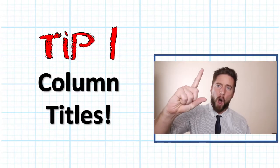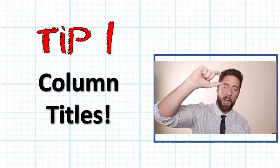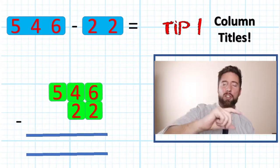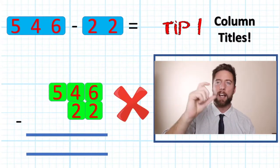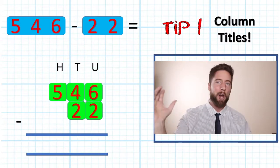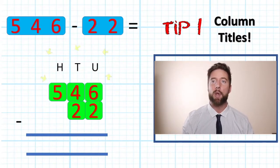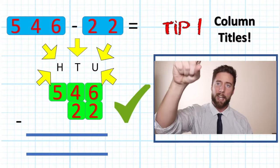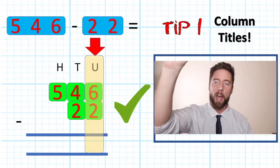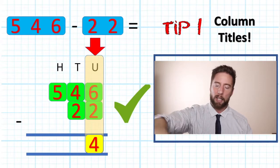Tip number one: column titles. Put your column titles above the correct columns — units, tens, hundreds, thousands, ten thousands, hundred thousands, millions, ten millions, hundred millions — whatever it is. Get them in there so we are aware of what we are doing in the operation at the time. Tip number one: column titles.